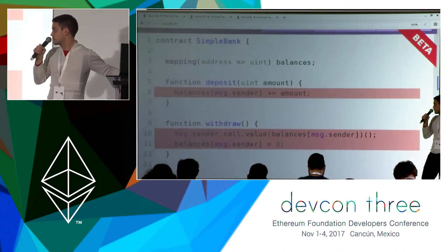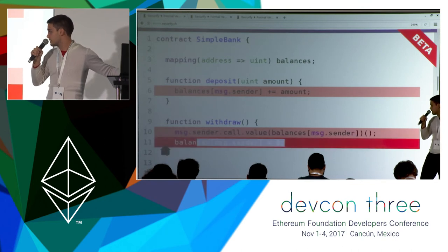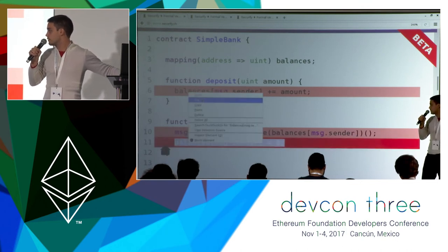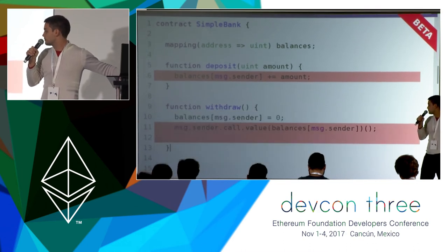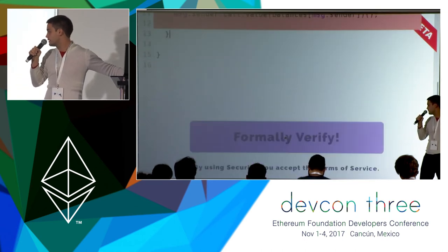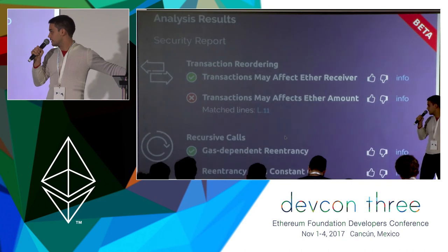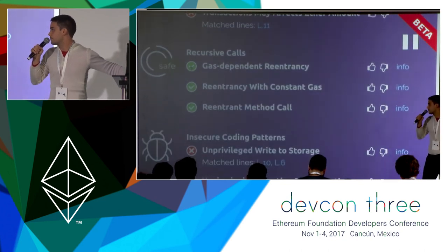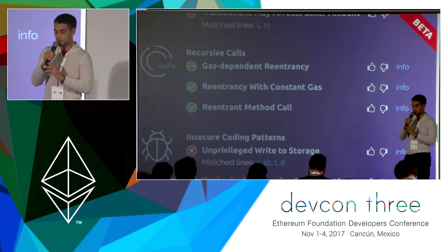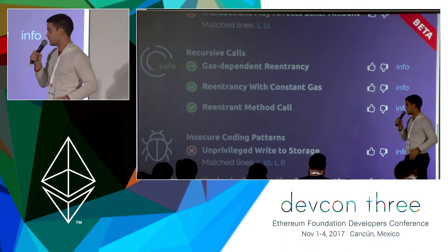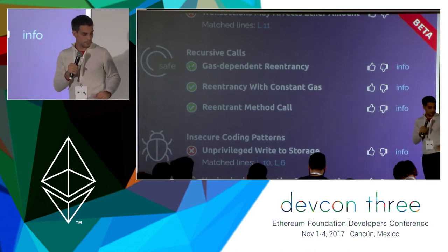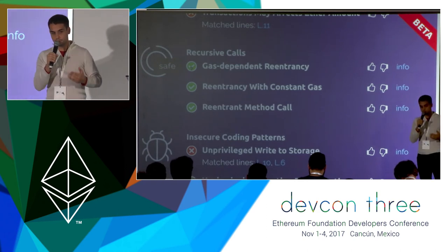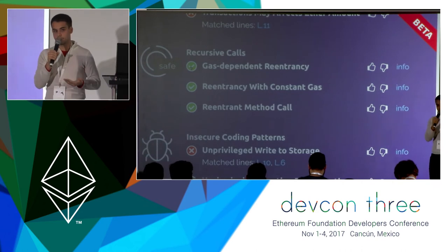One solution for this bug is to remove the storage assignment line and put it before the Ether transfer — a quick-and-dirty solution. If we click Formally Verify again, we get another security report, and the pattern is no longer flagged. You have made sure that your contract can no longer be a victim of gas-dependent reentrancy. This is a strong guarantee — you are 100% sure, meaning the code coverage is effectively 100%.